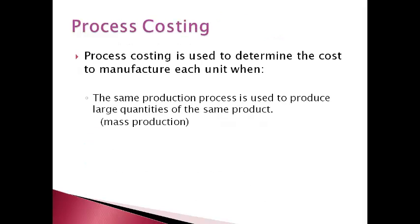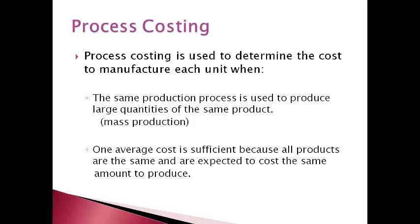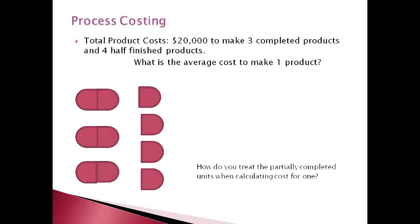Process costing is used to determine the cost of one unit that is then used to value inventory and cost of goods sold. Process costing is used when all units are made the same. When all units are made the same, one average cost is used to value inventory. In this illustration, the company incurred a total of $20,000 in product costs to make three complete units and four units that are half complete. An average cost is sufficient because all units are made the same and therefore should cost the same.